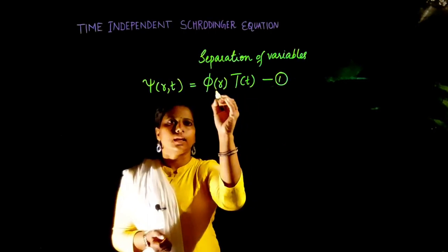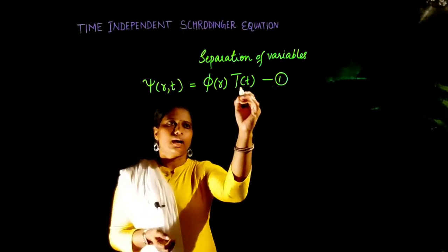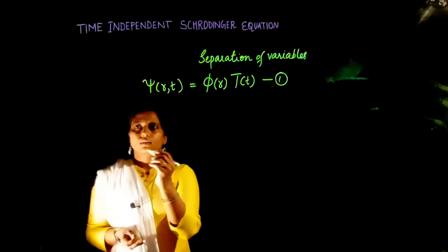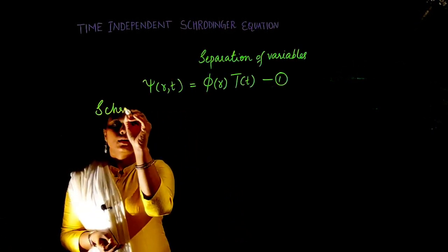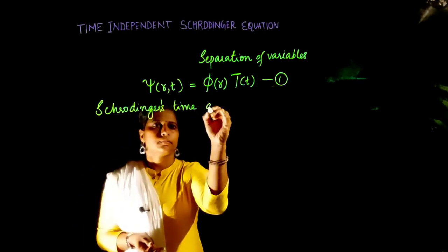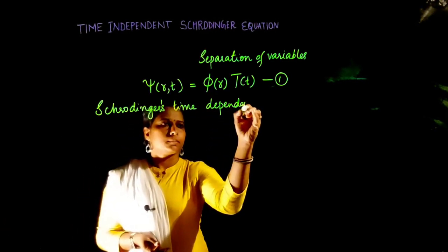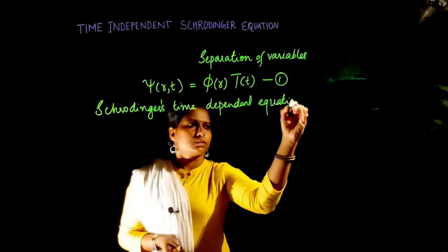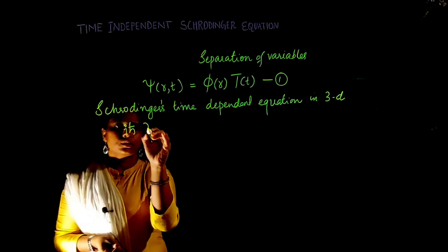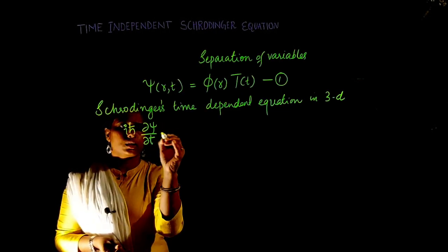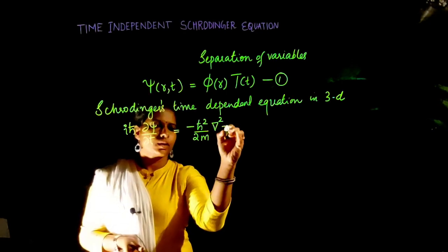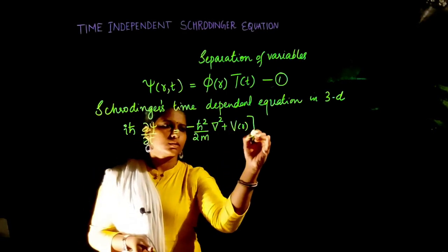Here phi of r contains exclusively the space part r, and T of t contains the time-dependent part. Now let us begin by writing the Schrödinger time-dependent equation derived in the last class, in three dimensions. It goes like this: i h-bar ∂ψ/∂t = (−ħ²/2m ∇² + V(r)) ψ.